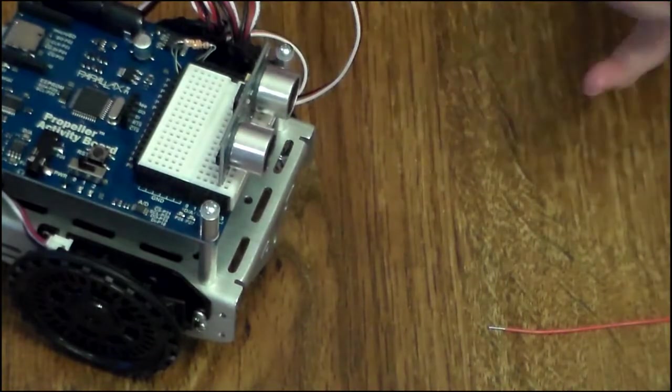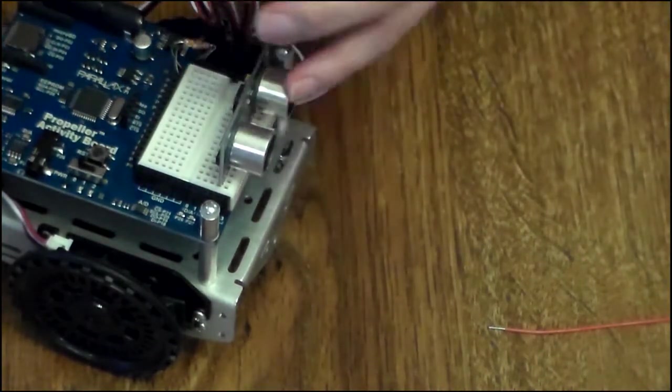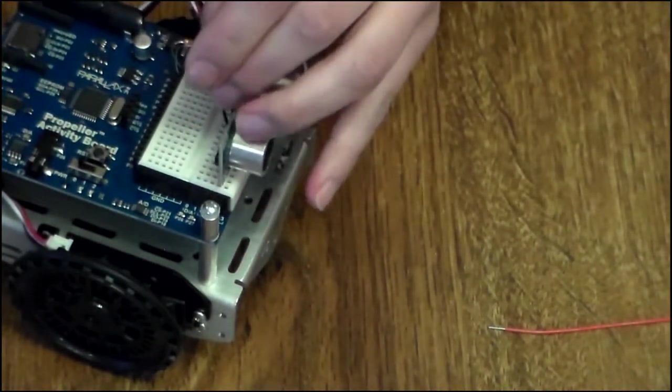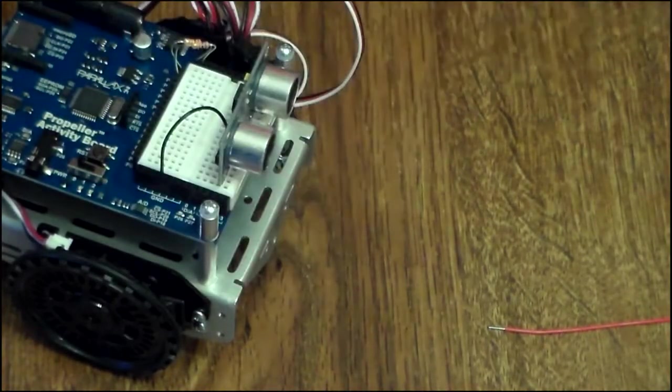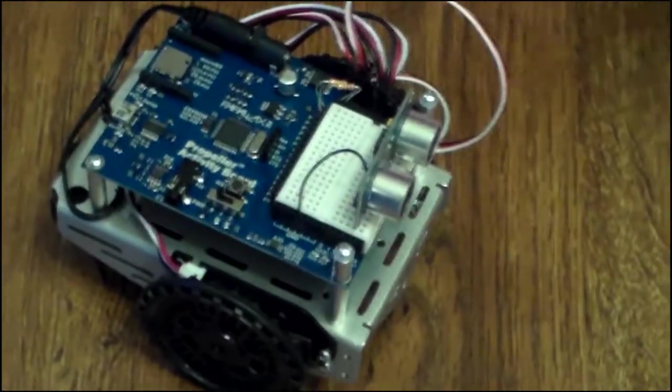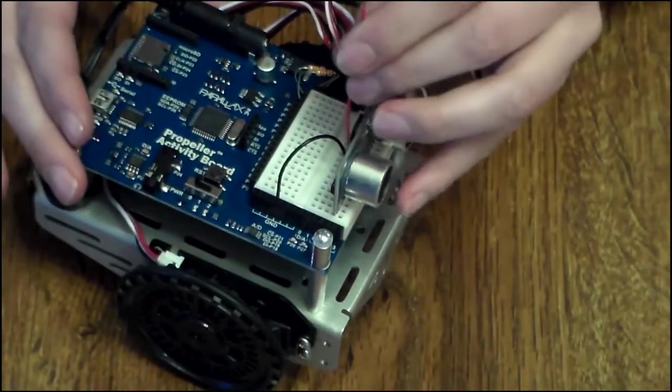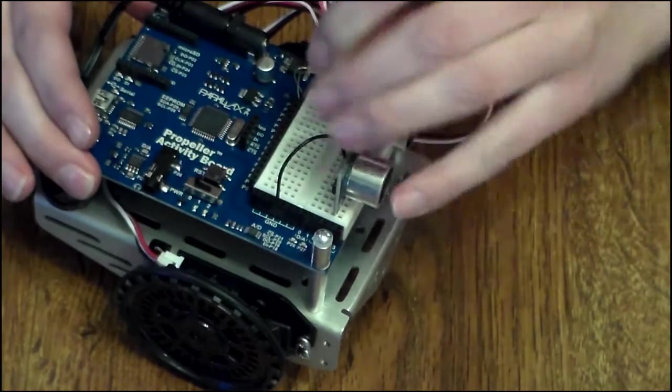We'll hook up the ground first. So the ground will go from the right pin and then put that one to the ground. The middle pin is the 5 volts, so we'll hook from the 5 volts from the middle pin to the 5 volt.